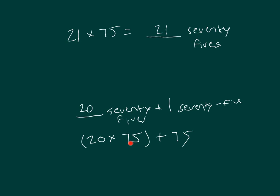we'd write 20 times 75 plus 75. 2 times 75 is 150, so 2 tens times that is 1,500. Plus 75 equals 1,575.